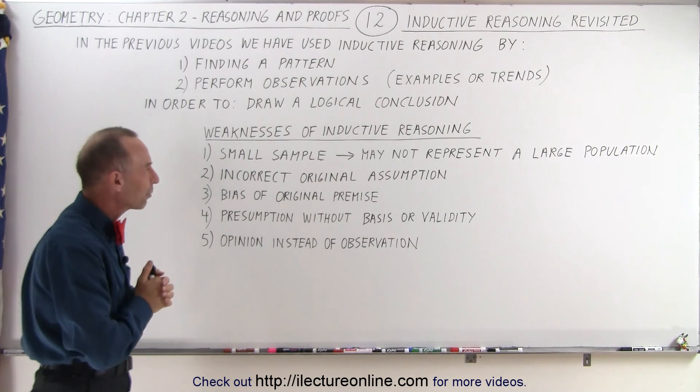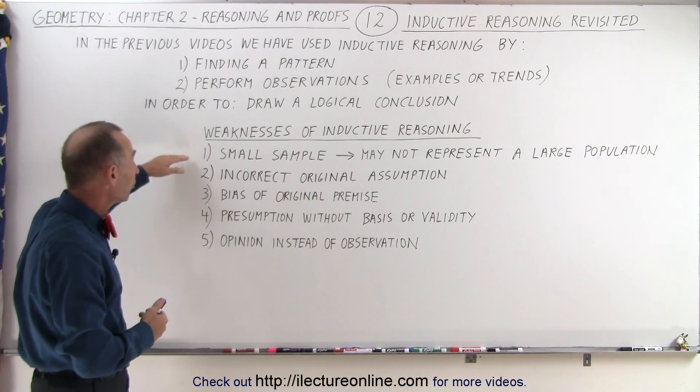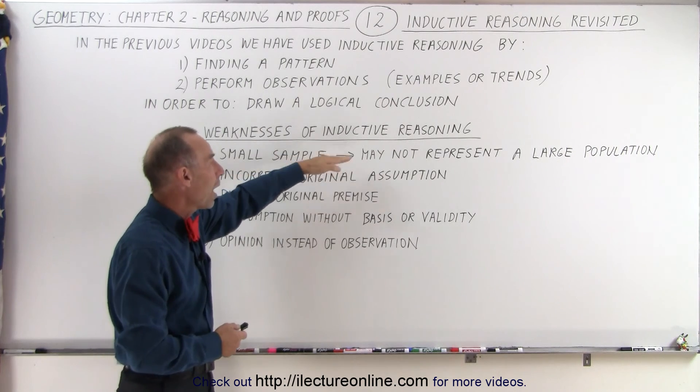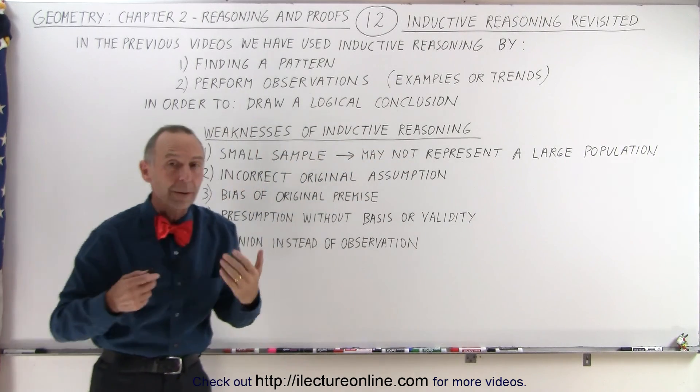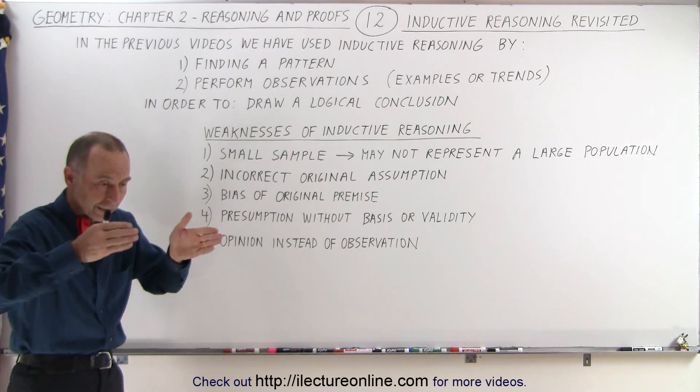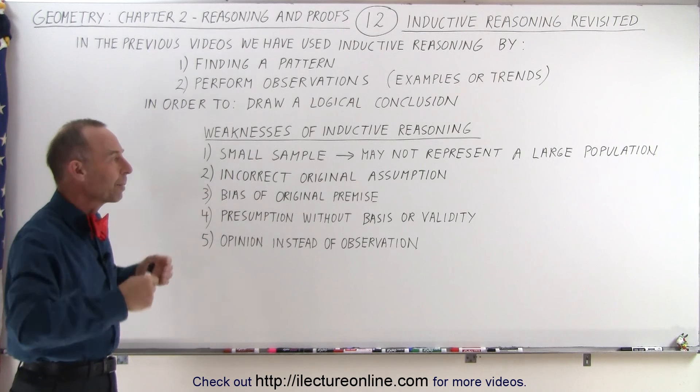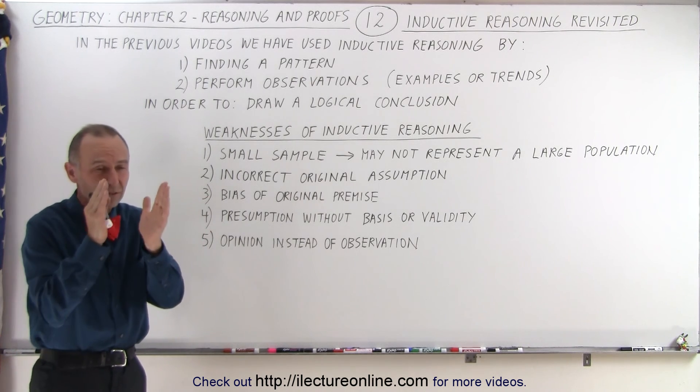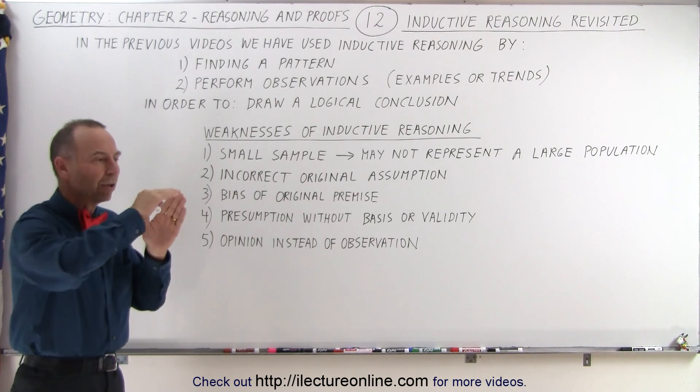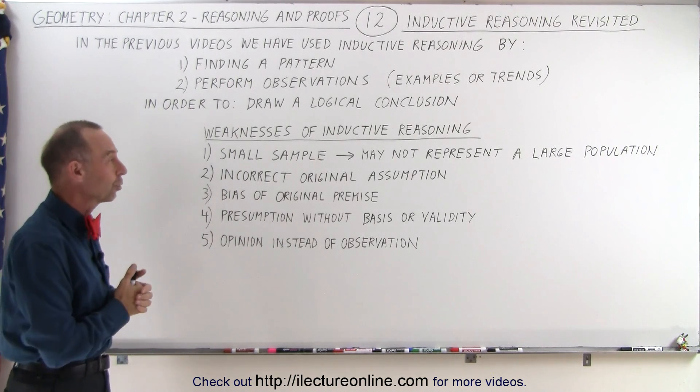Let's take a look at what some of the weaknesses are when we do inductive reasoning. First of all, a small sample doesn't always indicate how a large population can be represented. Even though you look at a small sample and say, okay, this looks like the pattern, and therefore this pattern must continue in the total population, which may not always be the case if your sample is small and you haven't allowed a large enough sample pattern to dictate what you think is going to happen in the total population.